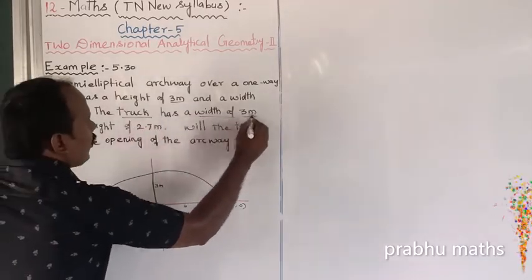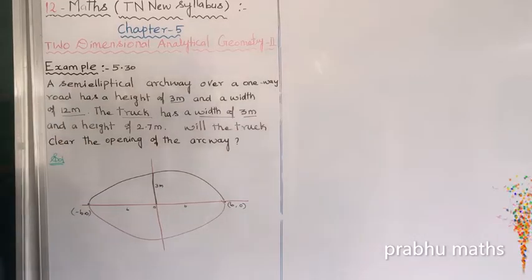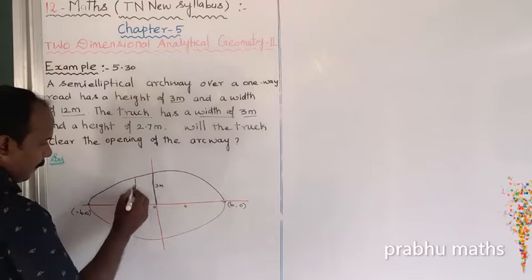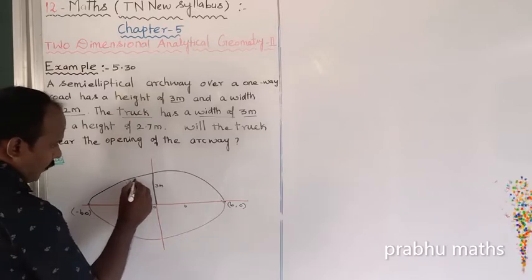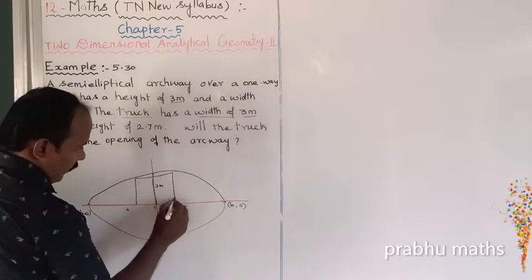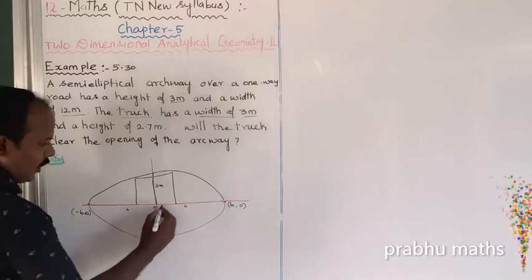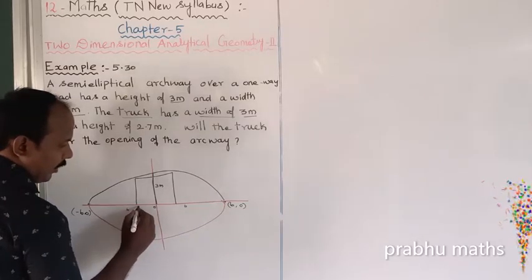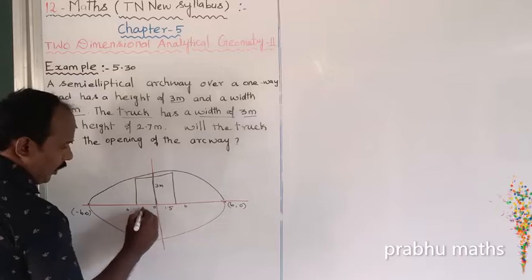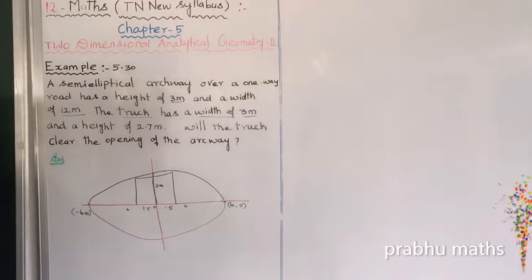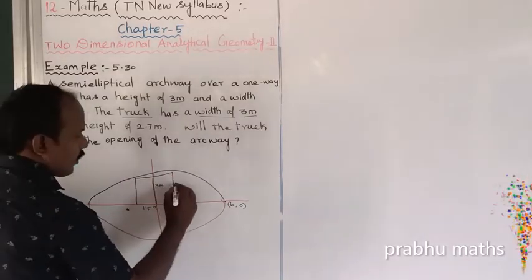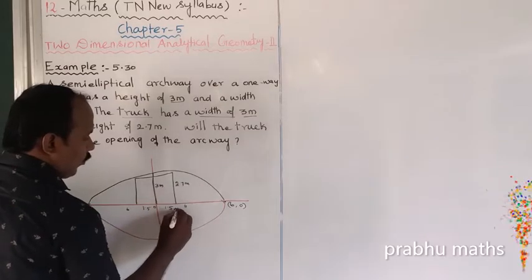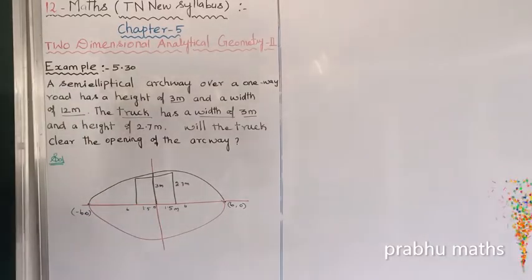The truck width is 3 meters. Since the truck is centered, the half-width is 1.5 meters on each side. So we consider x = 1.5. The truck height is 2.7 meters.